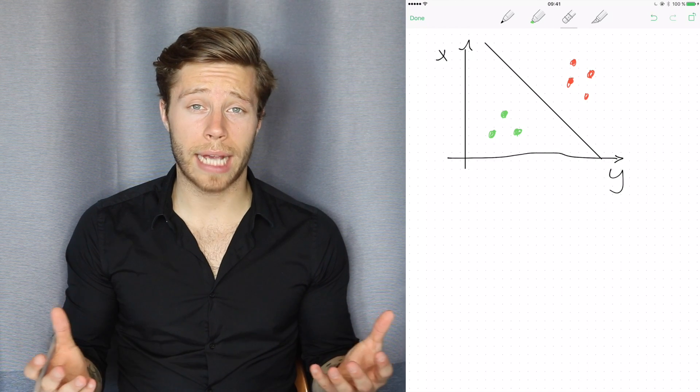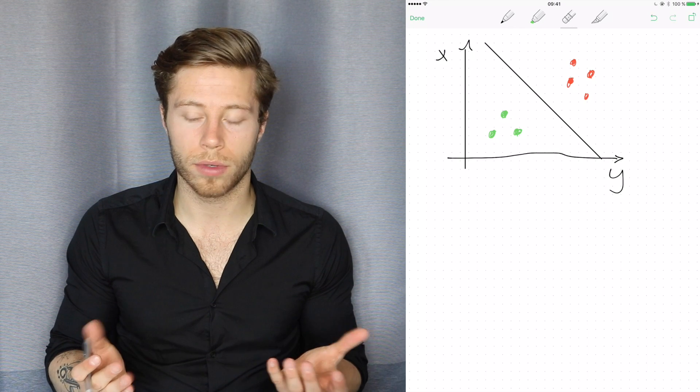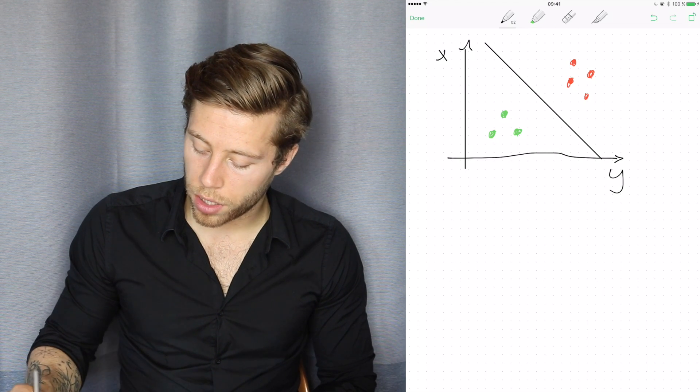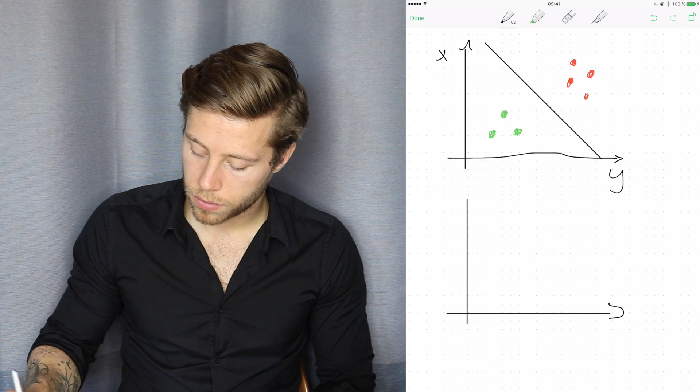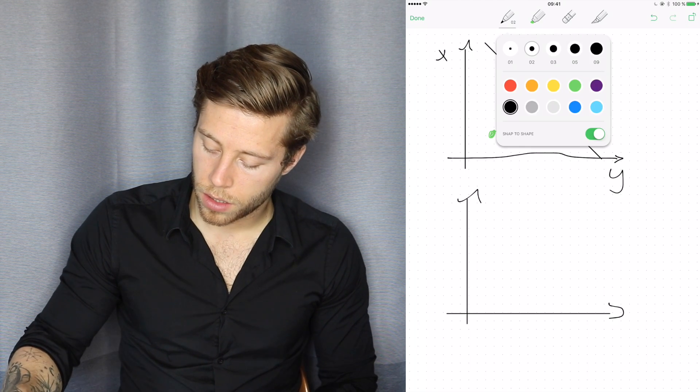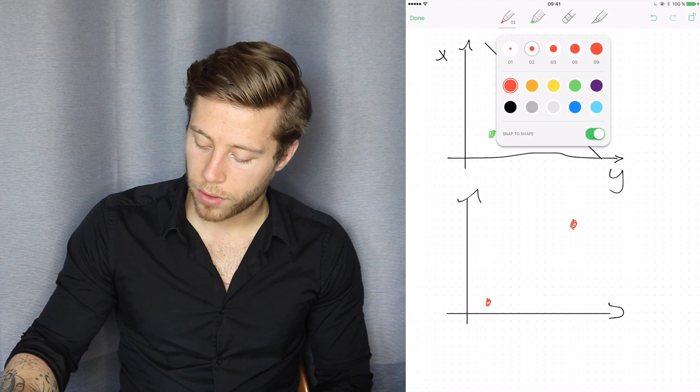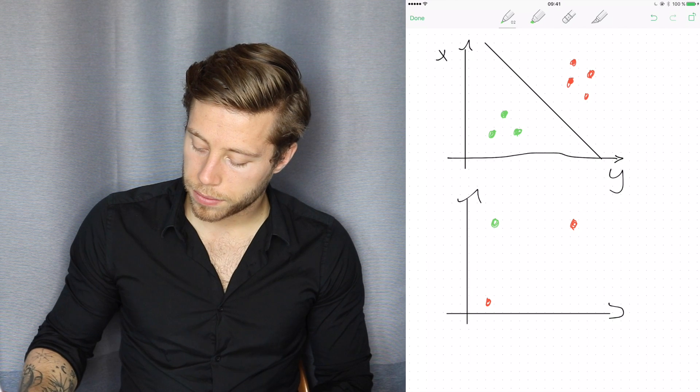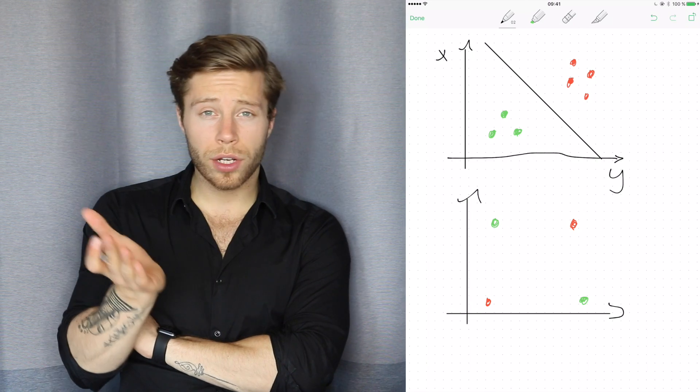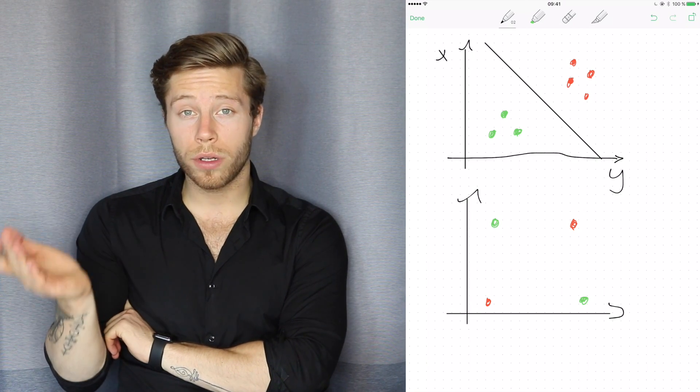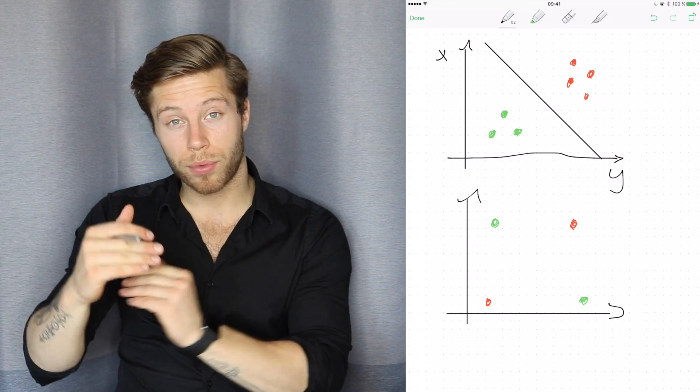Let's talk about the XOR problem and why it was a bad thing that this Perceptron couldn't solve the XOR problem. Let's draw another graph here. So now we have a red dot here and we have a red dot here, and we have a green dot here and we have a green dot here.